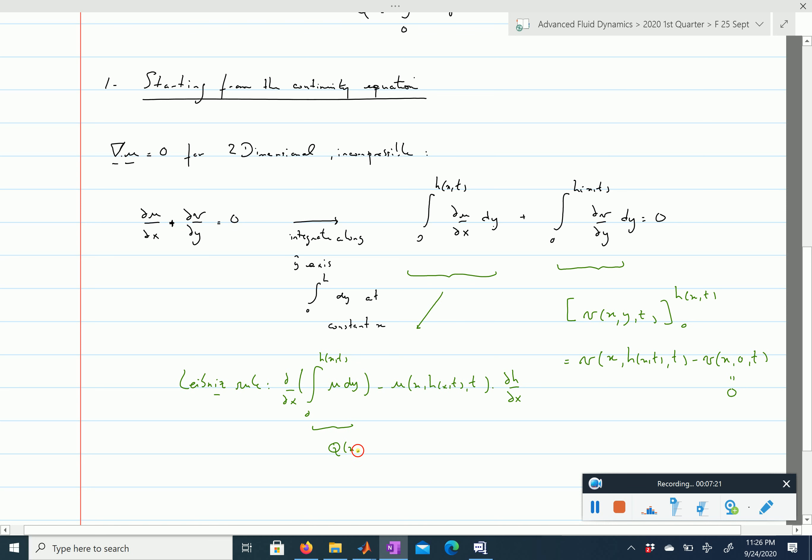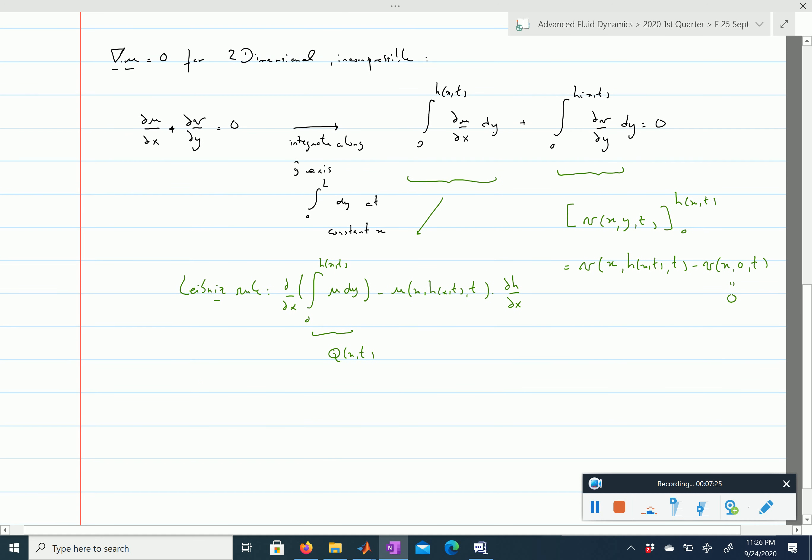To summarize, from these terms we have ∂q/∂x minus u at (x,h,t) times ∂h/∂x plus velocity v at (x,h(x,t),t), and this equals zero. Integrating between 0 and h gives us zero.